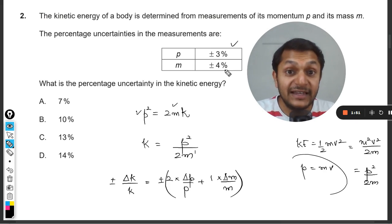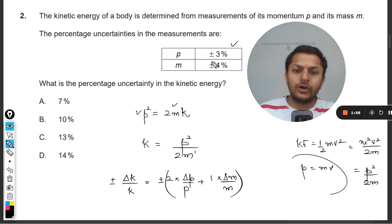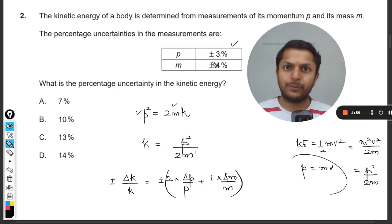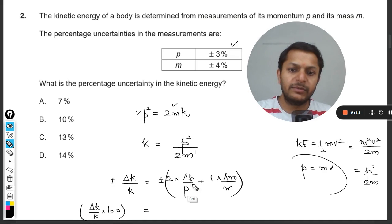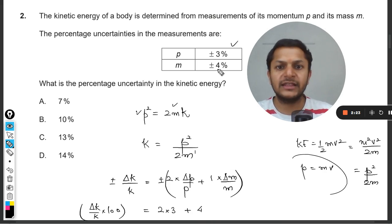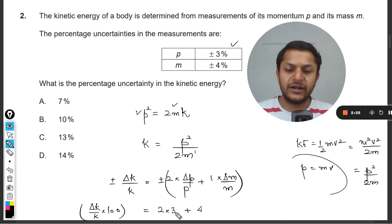The percentage error is given, it is not the absolute error, so we need not plug in the values of delta p and p directly. We can put three percent there. You can multiply 100 on both sides, so this will be delta k divided by k times 100. So 100 will be multiplied in the bracket here and here, so it will be twice the percentage error in momentum plus one times the percentage error in the mass, which is 4.